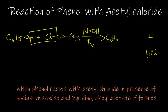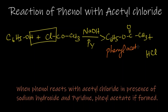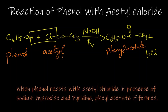What happens is this hydrogen and this chlorine will leave as hydrogen chloride. The remaining parts will be united together to form C6H5-O-C(=O)-CH3. The name of this compound is phenyl acetate. This is an ester.